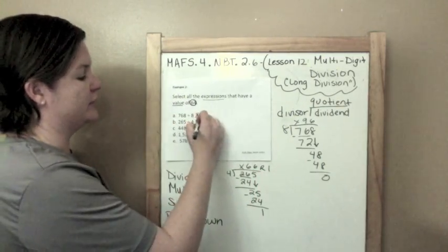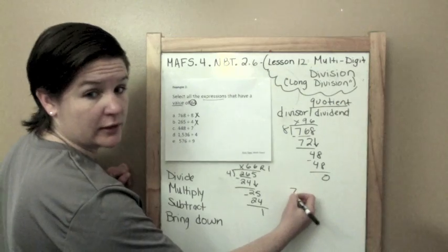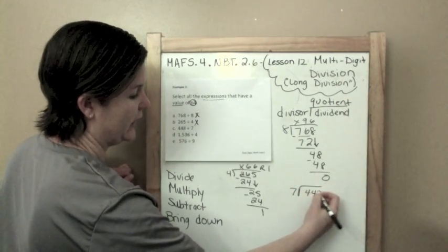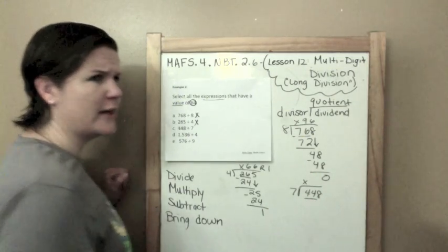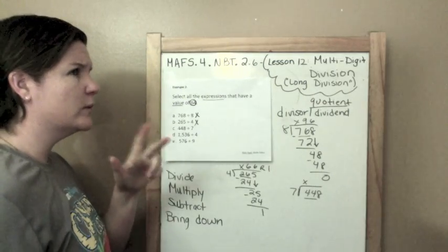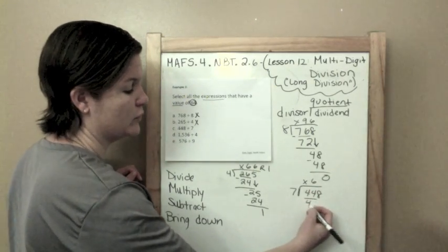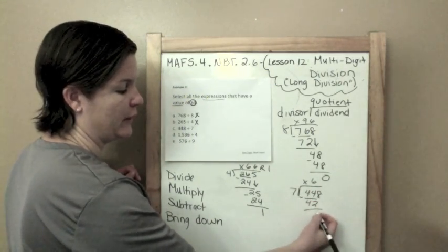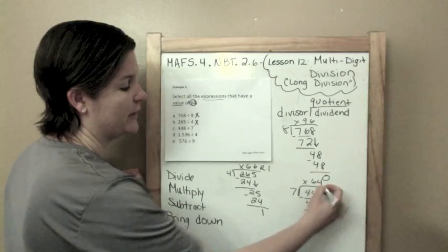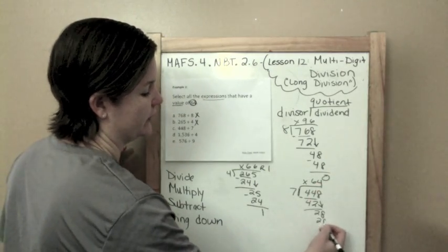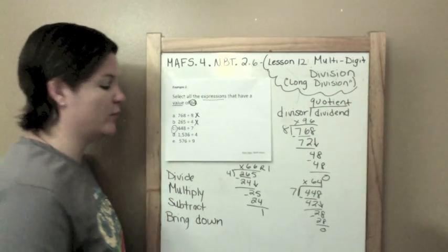Now 7 going into 448. How many times does 7 go into 4? It can't. How many times does 7 go into 44? We can do that: 7, 14, 21, 28, 35, 42, that would be 6 times. 6 times 7 is 42. That would be 2. Bring down that 8. 28: 7 goes into 28 evenly 4 times. Oh, we have our 64! But let's finish it. Don't stop there though, because it's a multi-select, it could be more than one right answer.